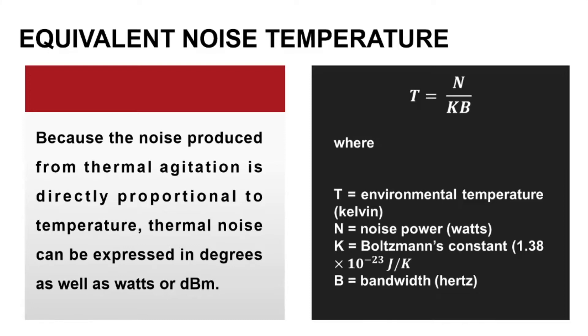So here we can see the formula T equals N over KB, where T is the environmental temperature in Kelvin, N is noise power in watts, K is Boltzmann's constant, 1.38 times 10 raised to negative 23 joules per Kelvin, and B is bandwidth in hertz.